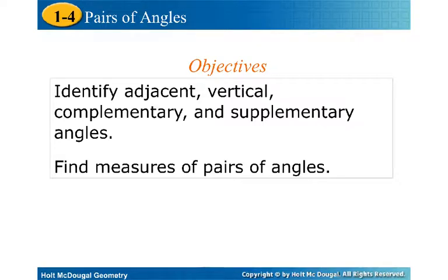All right, so here we are with our pairs of angles notes for geometry. Our objectives today are to identify adjacent, vertical, complementary, and supplementary angles. These are all pairs of angles that could happen, and then potentially use algebra to find the measures of the pairs of angles.